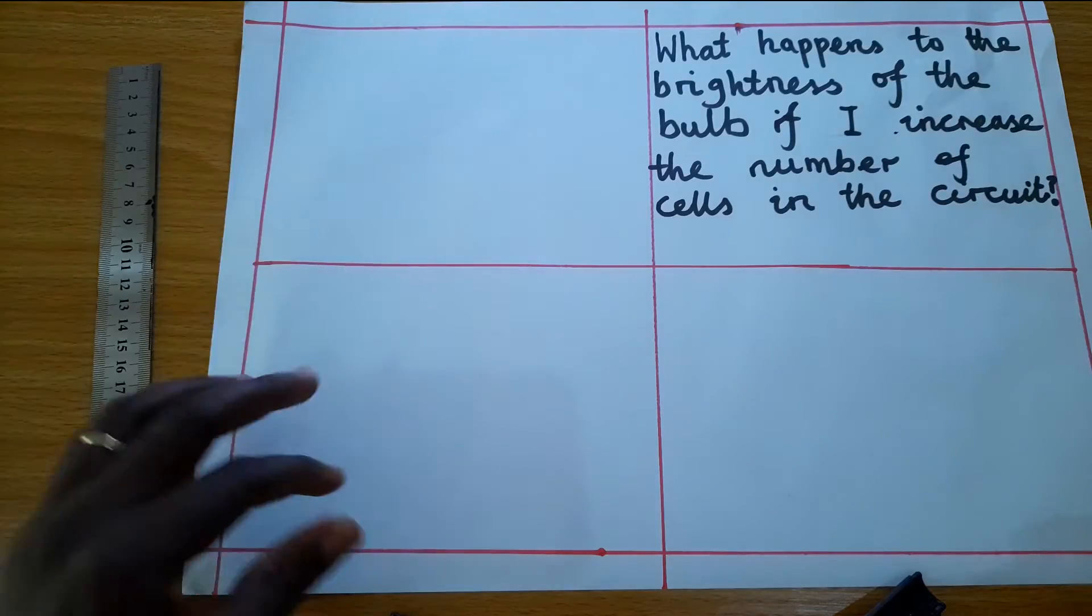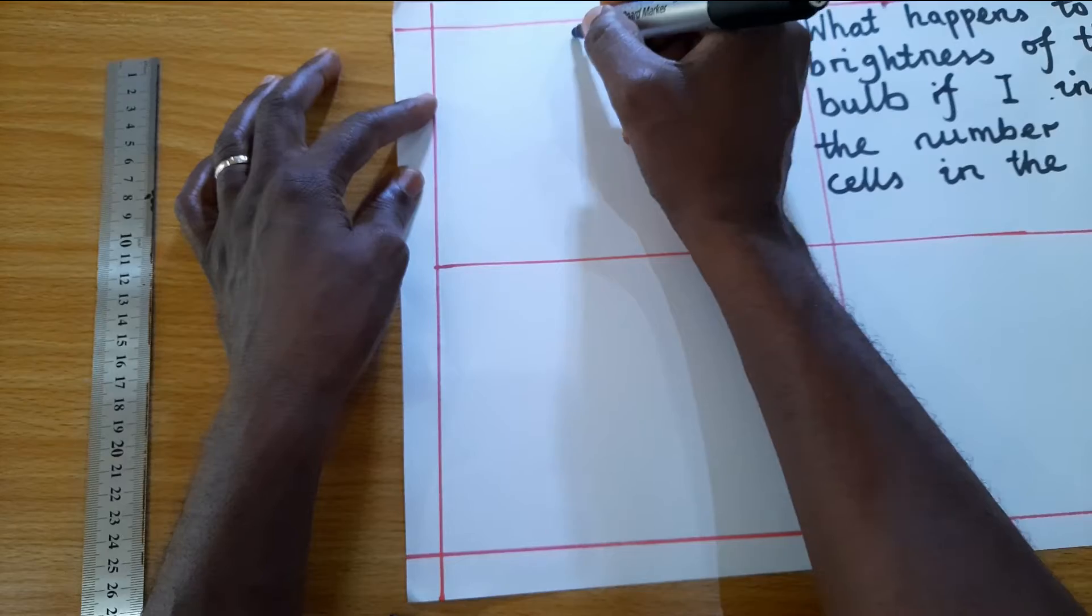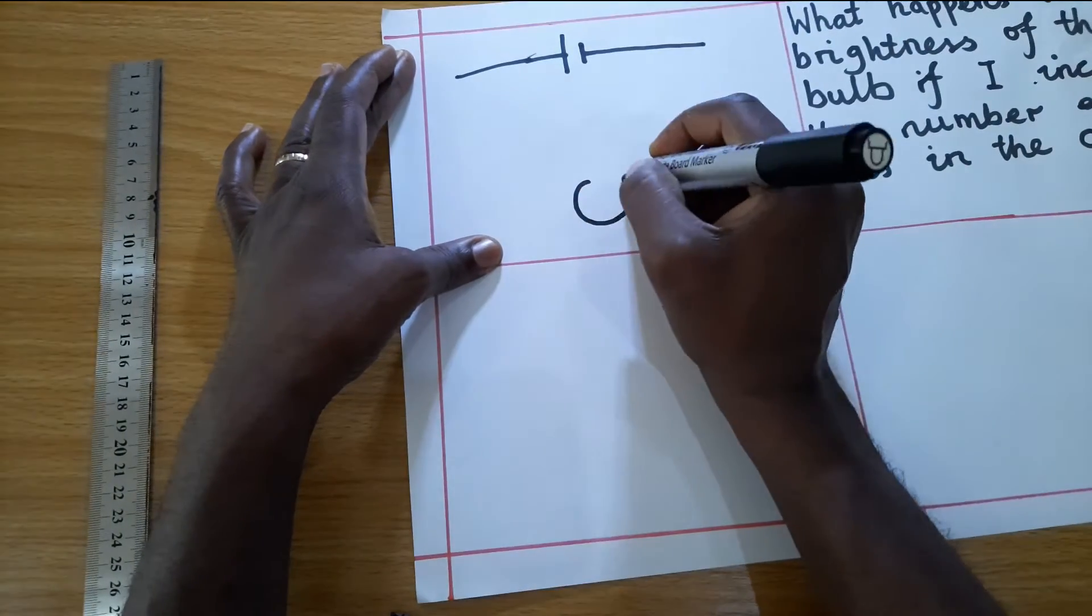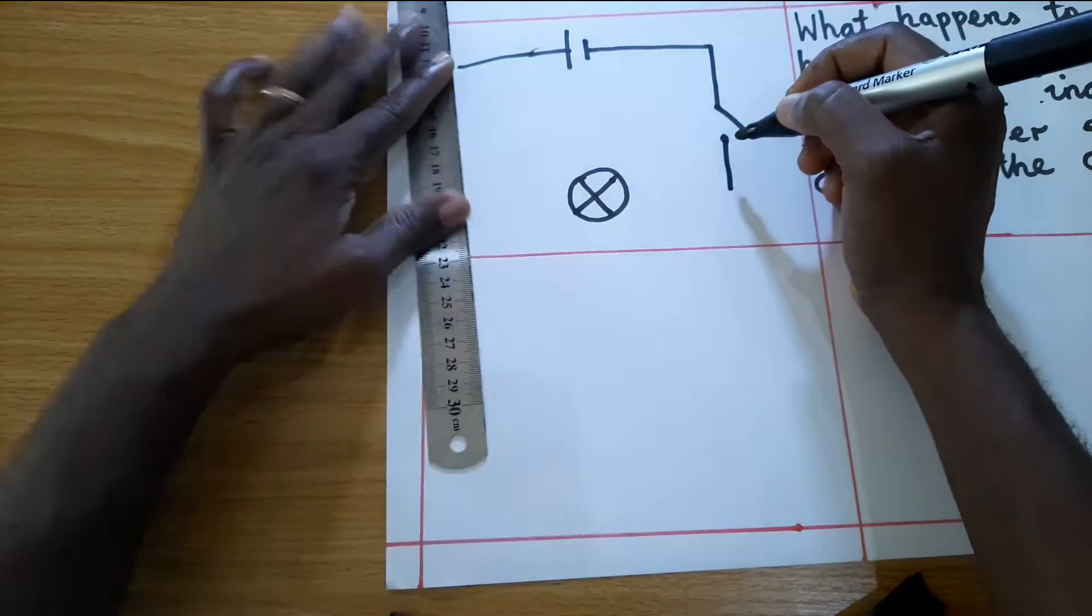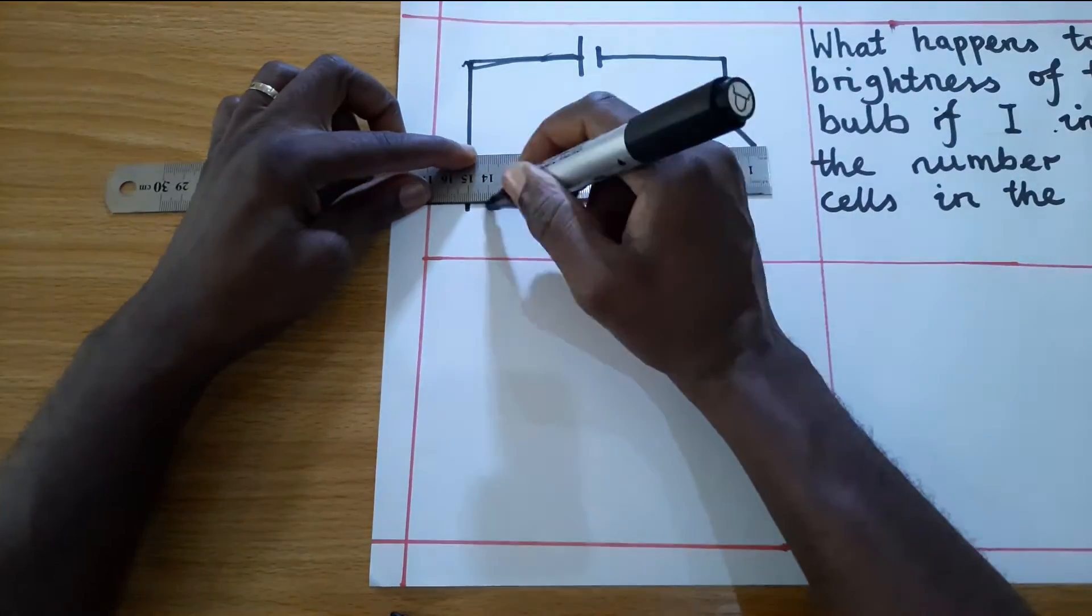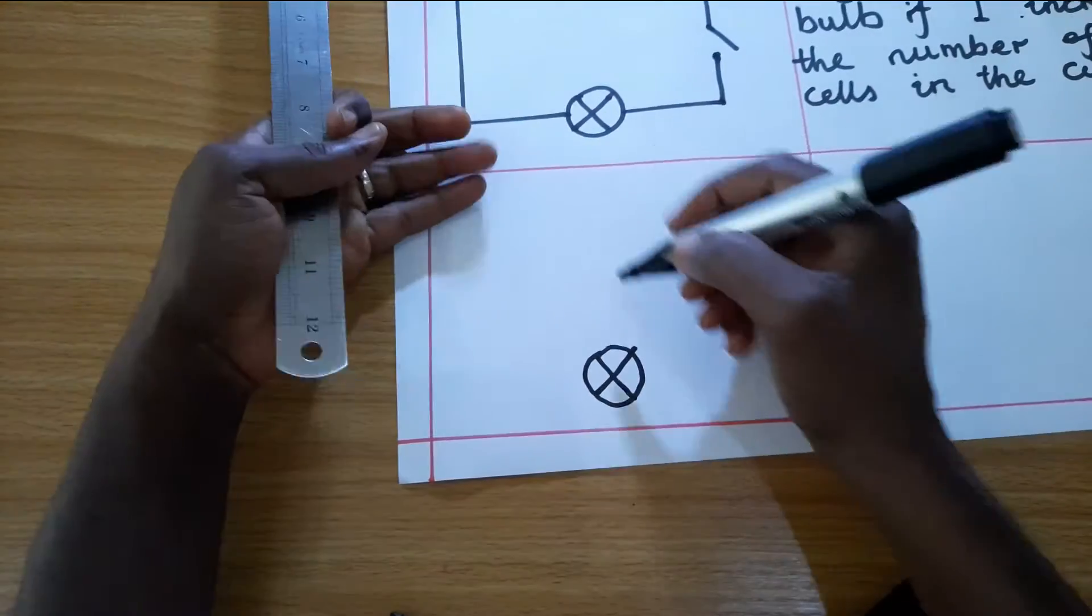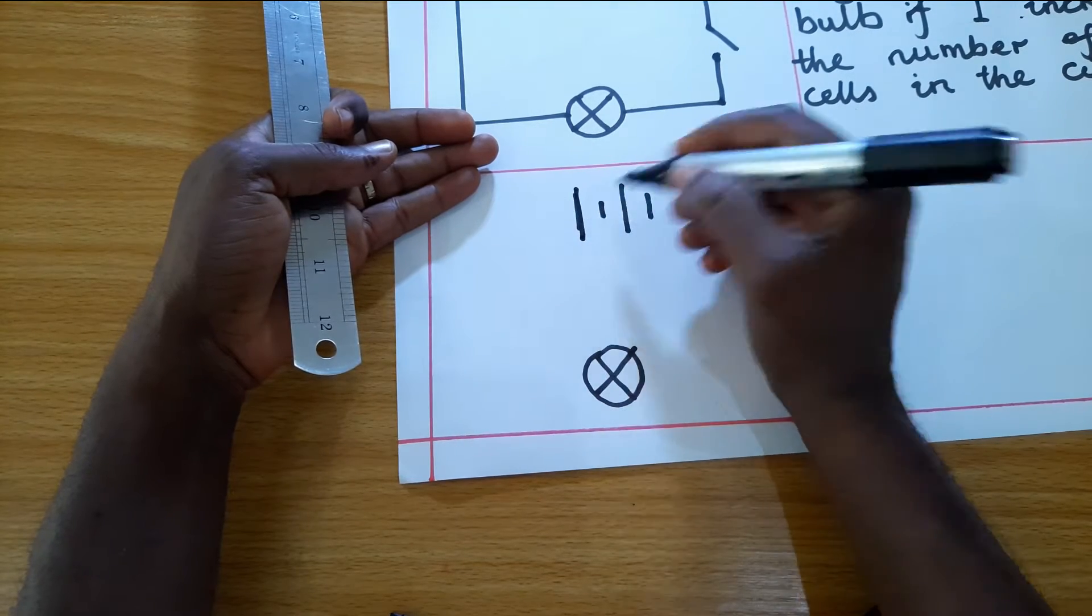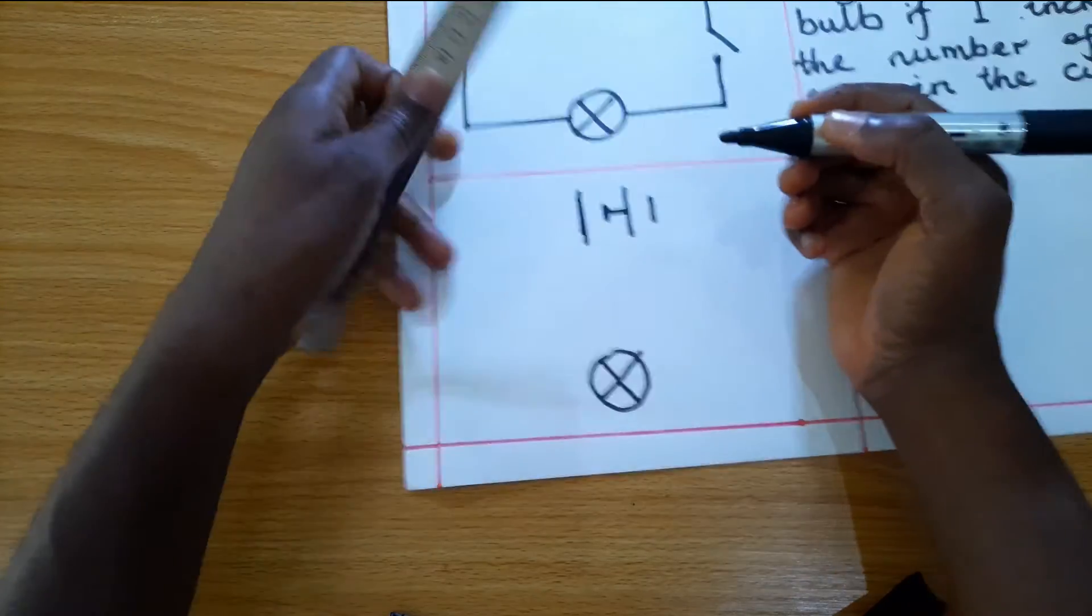So I'm going to draw the circuit now. This time I want to start with one cell. What happens to be the number of cells in the circuit? Positive, negative, positive, negative, and I continued that way.